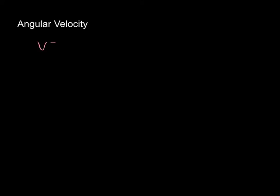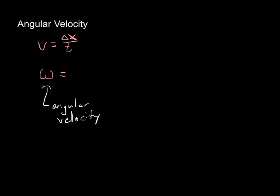Angular velocity is sort of like how fast something is going around the circle. Normally, velocity was equal to displacement over time — displacement over time was velocity in meters per second. Our equivalent in angular and circular terms is going to be omega, our angular velocity. That's going to equal delta theta over time, and the unit for that would be radians per second — how quickly we are changing our angle is angular velocity.